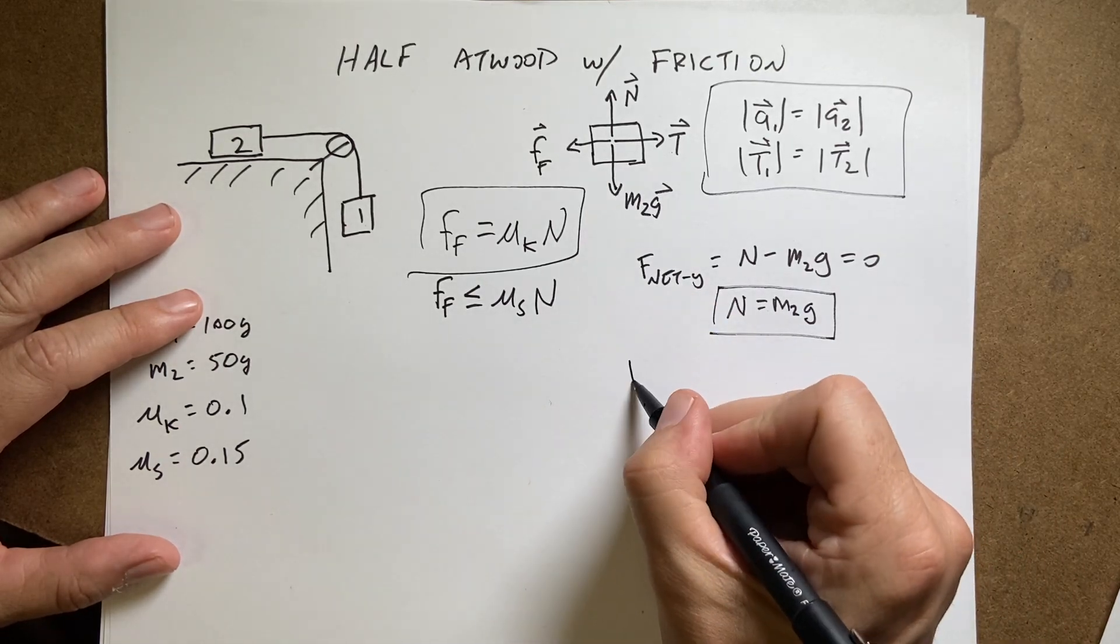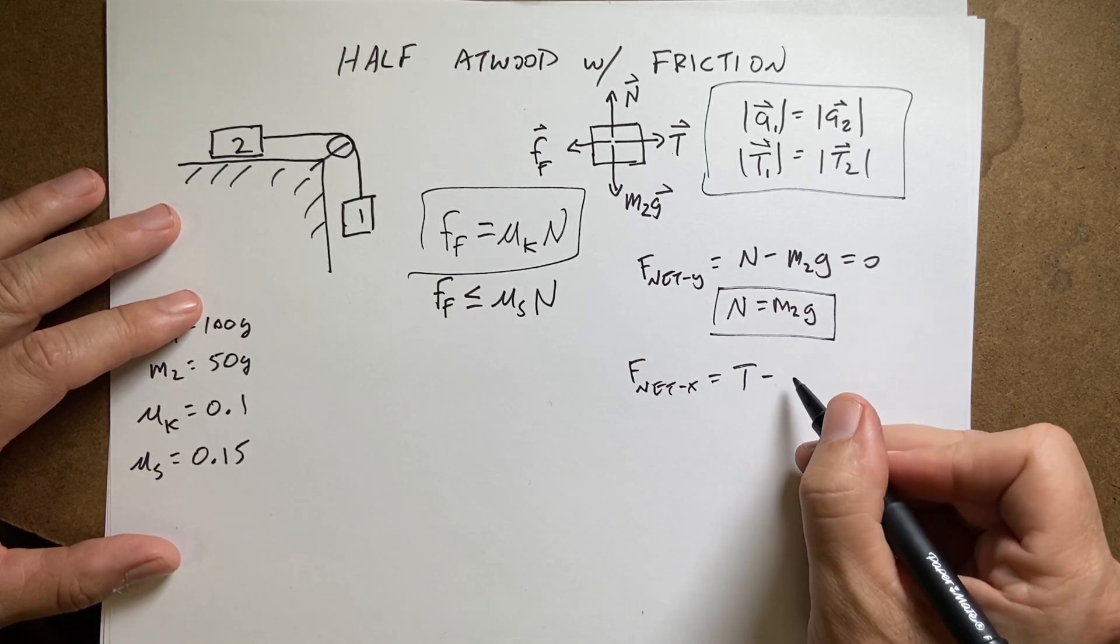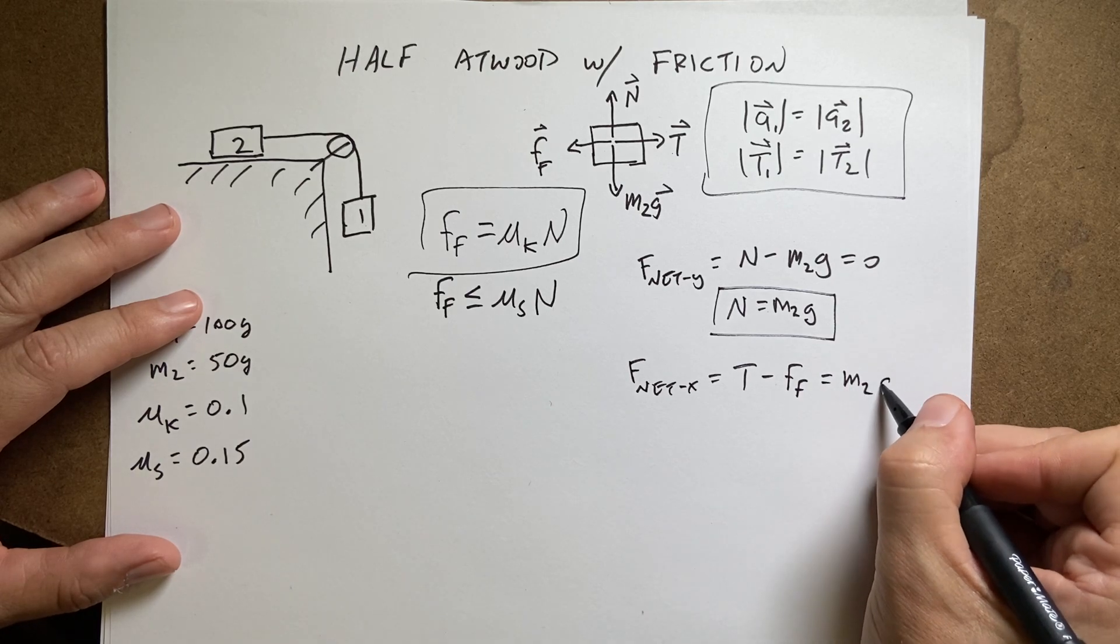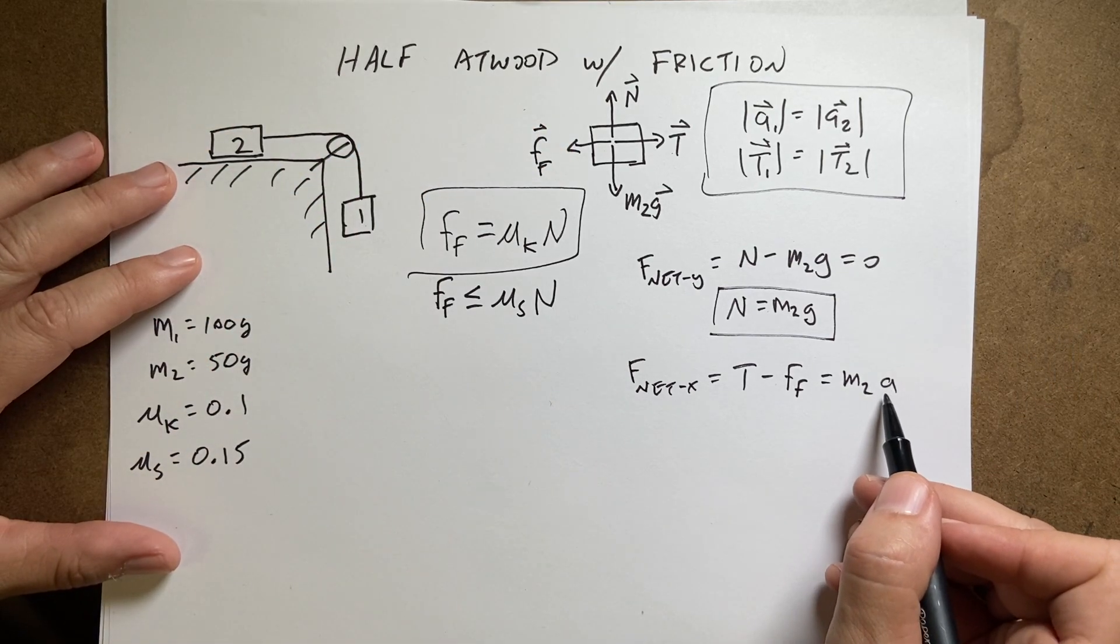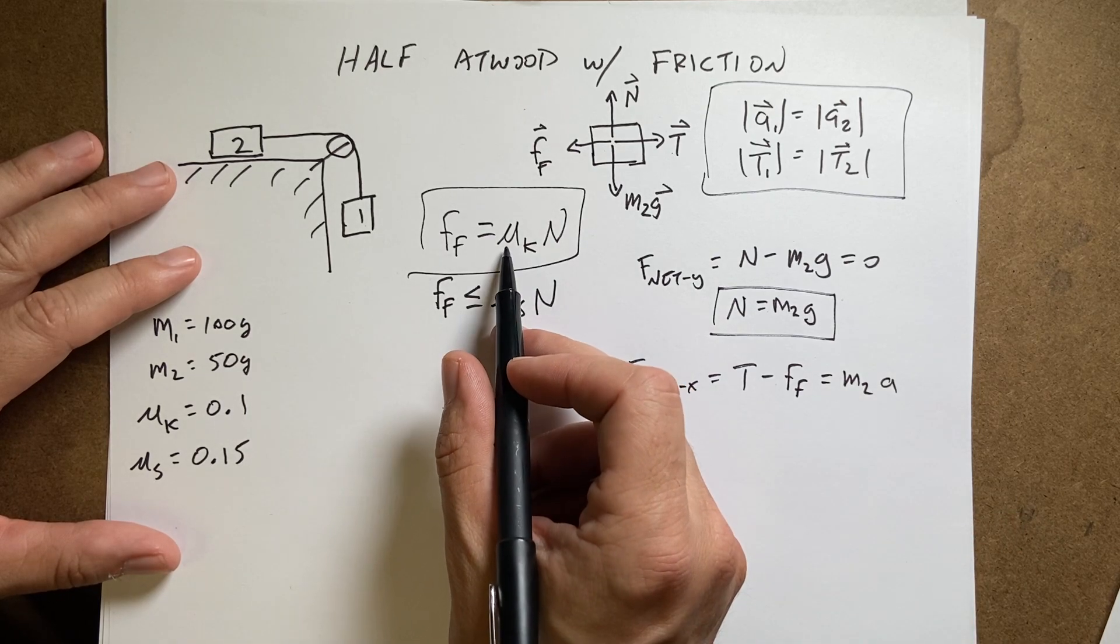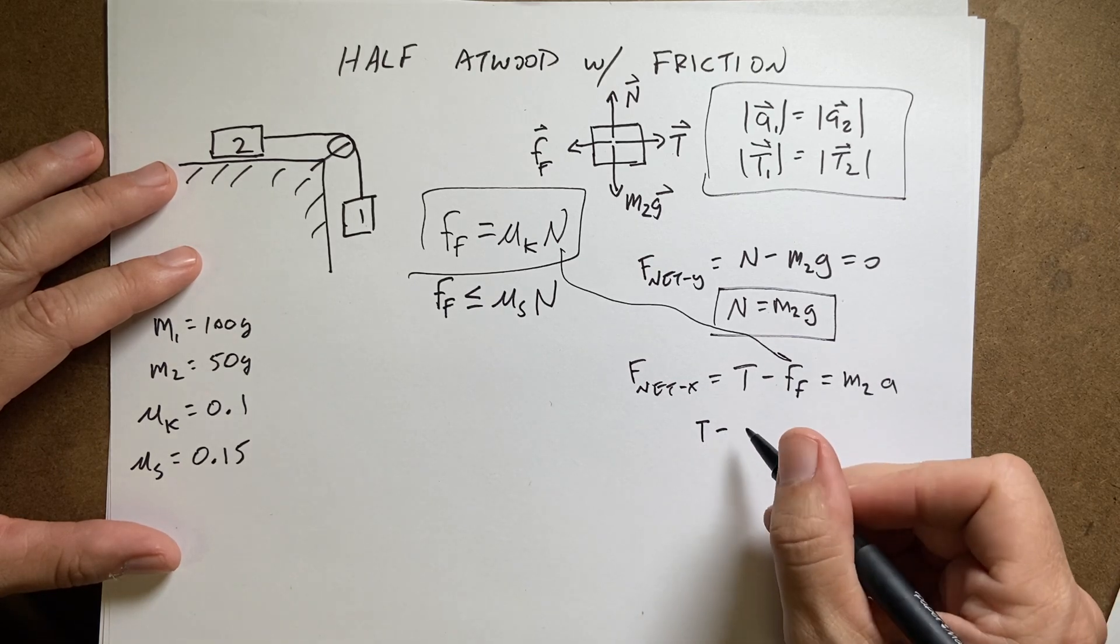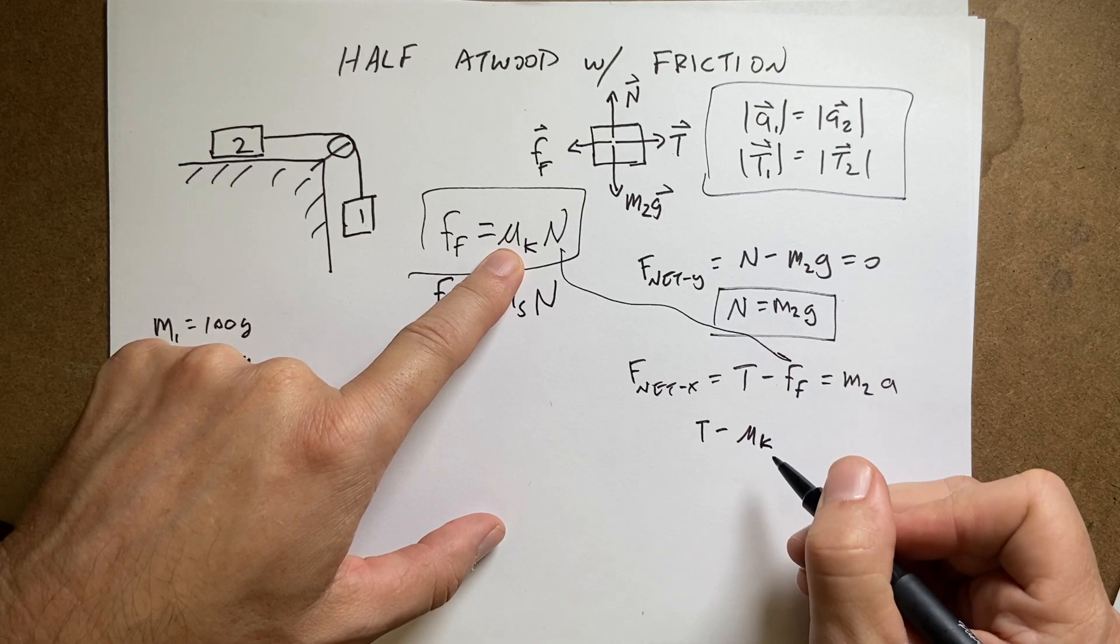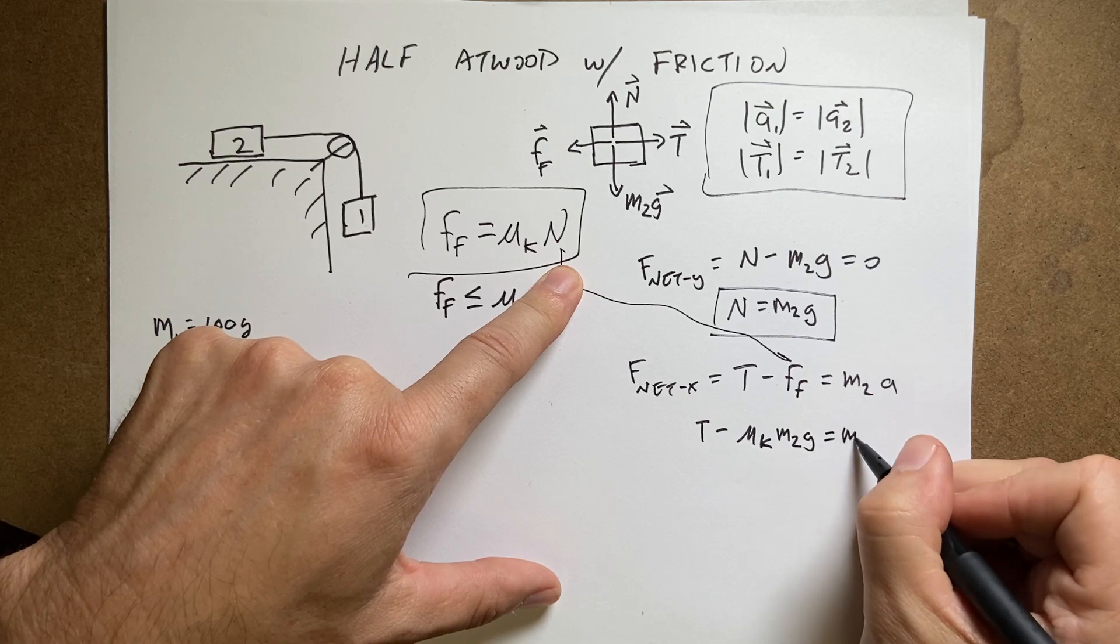Now if I look at the X direction, I could say F_net_X is going to be T minus the frictional force, and that's going to be equal to M2 times A. I'm assuming the whole thing is accelerating this way. I don't know A and I don't know T. But I can substitute in this model for the frictional force. If I do that, I get T minus mu_K times the normal force which is M2G equals M2A.